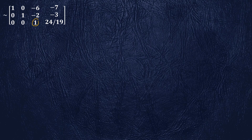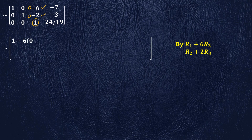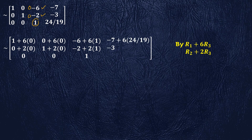The first non-zero element in row 3 is 1. We make both elements above it zero. For this we multiply row 3 by 6 and add it to row 1, and multiply row 3 by 2 and add it to row 2. After performing these two row operations we get the transformed augmented matrix.